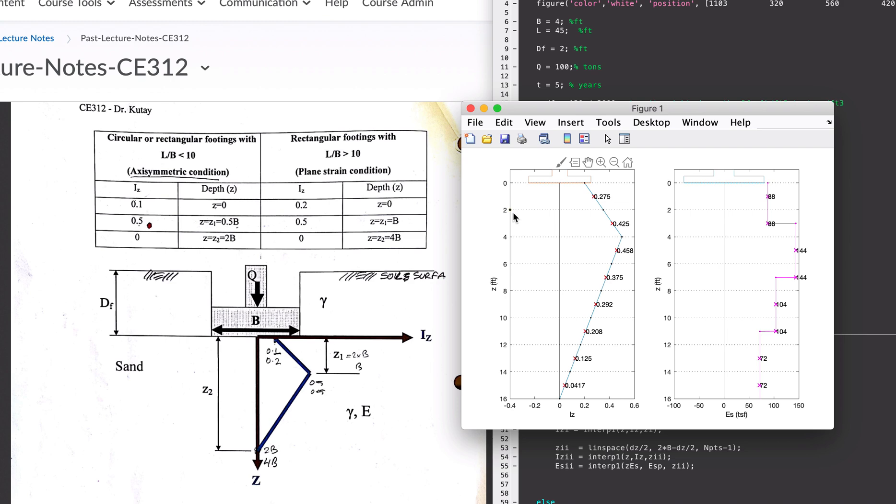Once you find those two, you plug them into this equation: IZ for each layer divided by EZ for each layer times the delta Z for each layer. You do that for each layer and essentially add them up. That's what this example is showing, essentially because we have multiple sublayers.